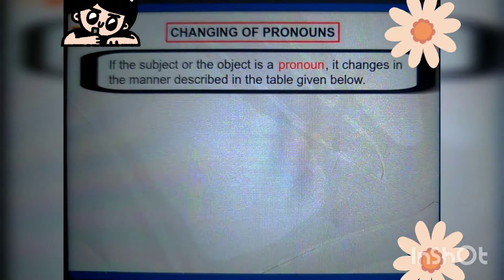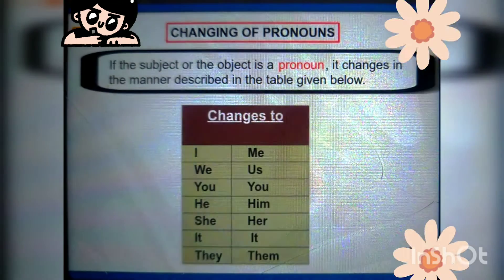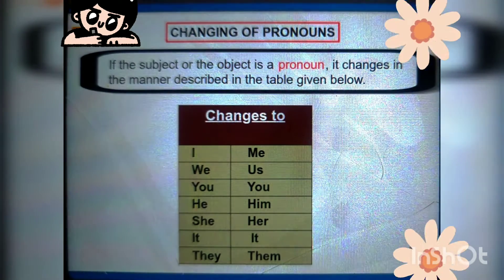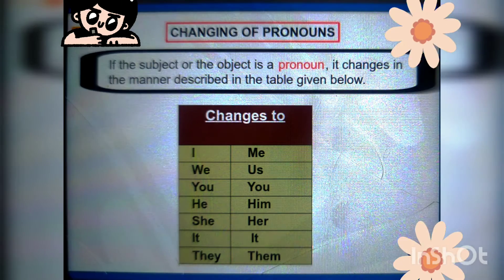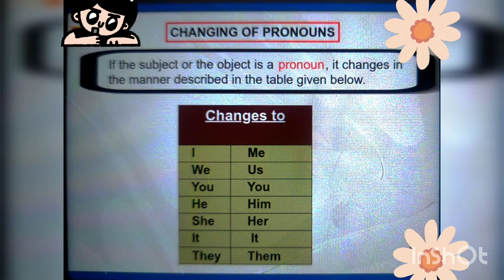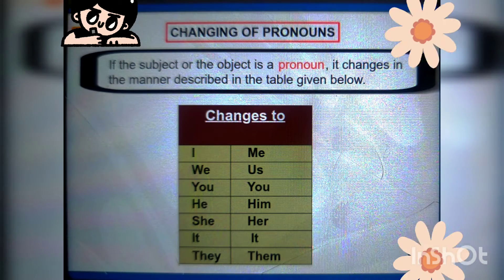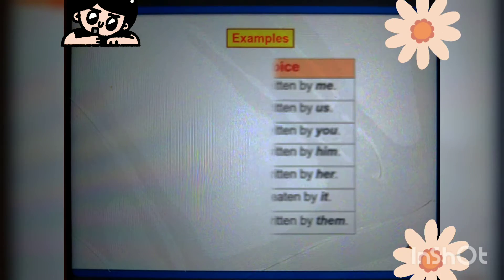Changing of pronouns: if the subject or object is a pronoun, it changes according to the table. I changes to me, we changes to us, you remains you, he changes to him, she changes to her, it remains the same, they changes to them. These are some of the rules you must remember, otherwise you are likely to go wrong.